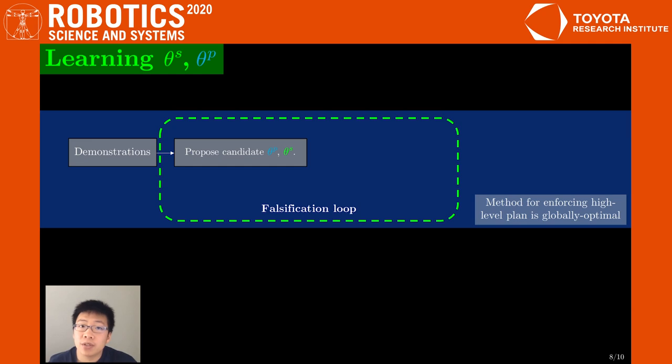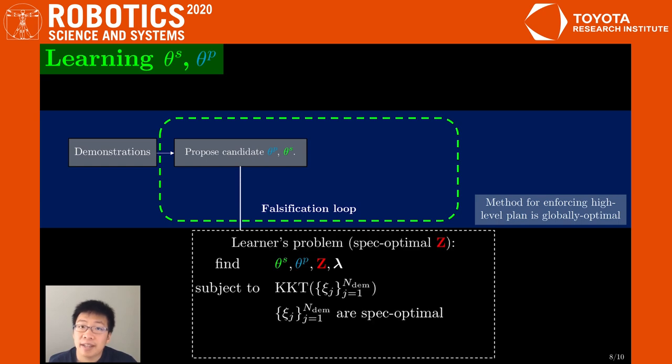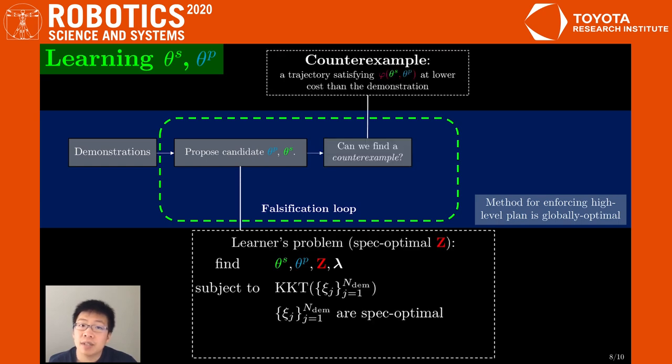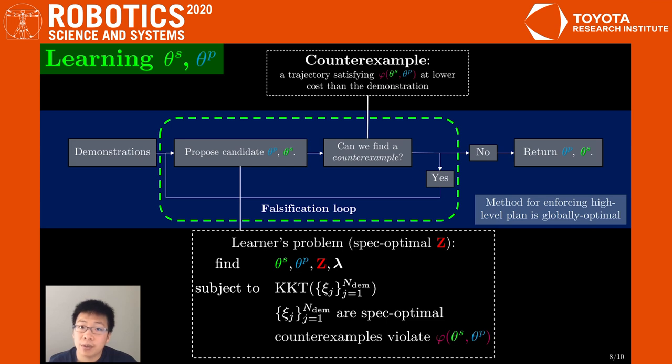As every globally optimal demonstration is also spec optimal, we can introduce a falsification loop to iteratively impose global optimality. Specifically, we impose spec optimality in the KKT problem, and then search to see if we can find a counterexample under the candidate LTL formula. If we can, the formula is invalid, and at the next iteration, we enforce that this counterexample violates the formula. We continue until we can no longer find counterexamples, at which point the return formula will make the demonstrations globally optimal.